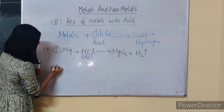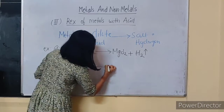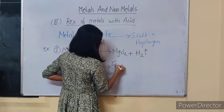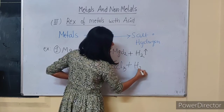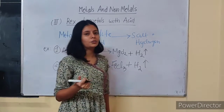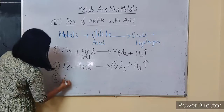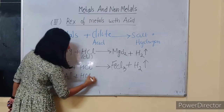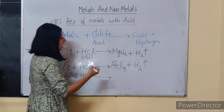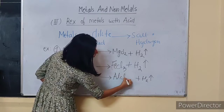Moving on to the next example: Fe reacting with dilute hydrochloric acid. Ferrous reacts with dilute HCl and we get ferric chloride, that is FeCl₃, plus H₂ released in the reaction. Note that reactions are not balanced — you can balance them on your own. Next is reaction of aluminium with dilute HCl: aluminium reacts and hydrogen gas is released along with aluminium chloride.